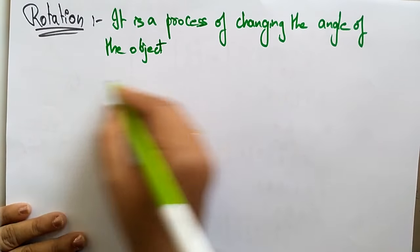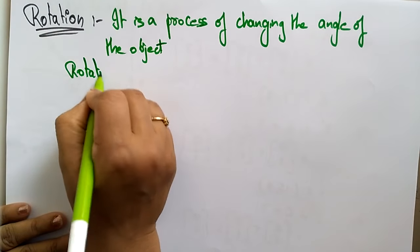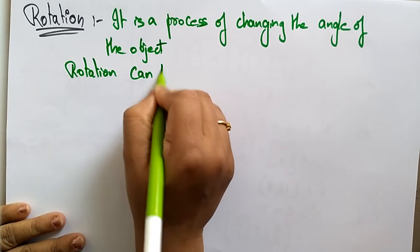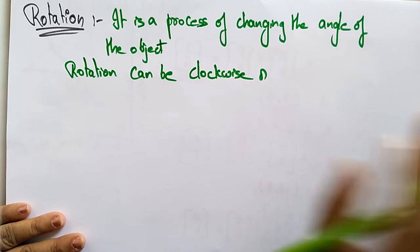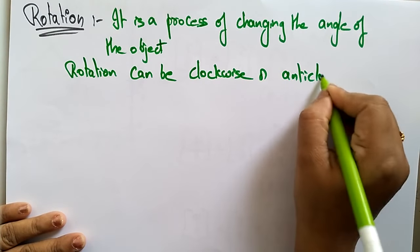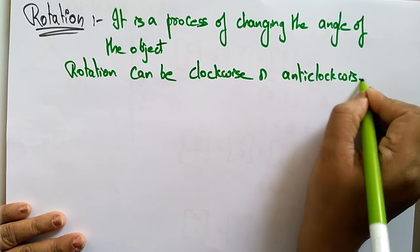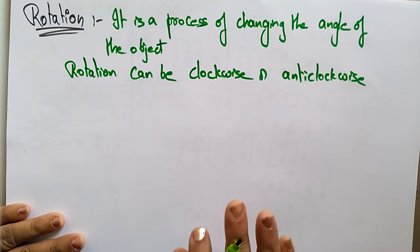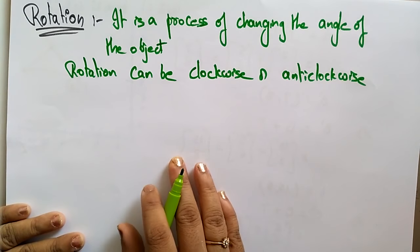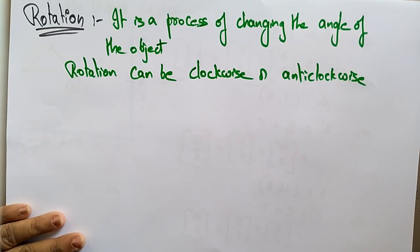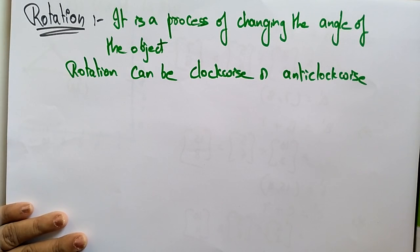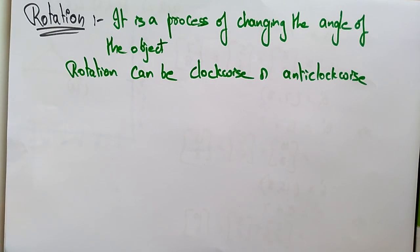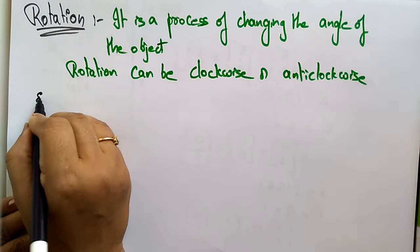Rotation can be done in a clockwise or anti-clockwise direction — forward or reverse. For rotation we have to specify the angle of rotation and the rotation point, which is called the pivot point — the point about which the object has to be rotated.